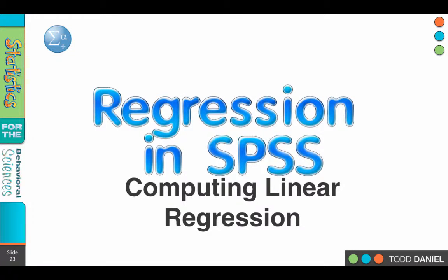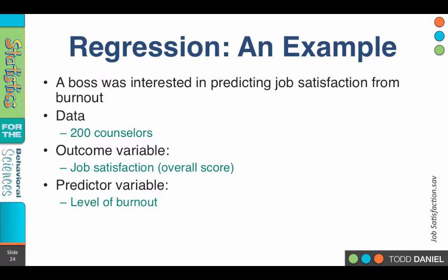We are now ready to turn our attention to SPSS as we learn how to compute linear regression. The example dataset that we're going to use is job satisfaction.sav. This is the same dataset that we used for our correlation example. The data involve 200 counselors and an outcome variable of job satisfaction. It's going to be an overall score, and we want to predict job satisfaction based on what we measure about that individual's level of burnout.